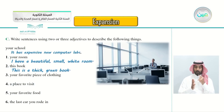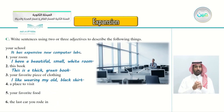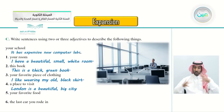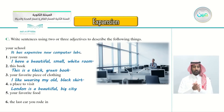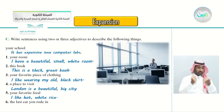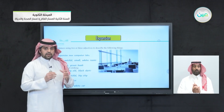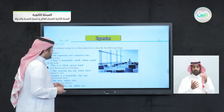Number three, your favorite piece of clothing: I like wearing my old black shirt. Number four, a place to visit: London is a beautiful big city. Number five, your favorite food: I like hot white rice. Number six, the last car you rode in: I rode a fast big white car — fast is opinion, big is size, white is color. You can describe any object with more than one adjective — just pay attention to the order.